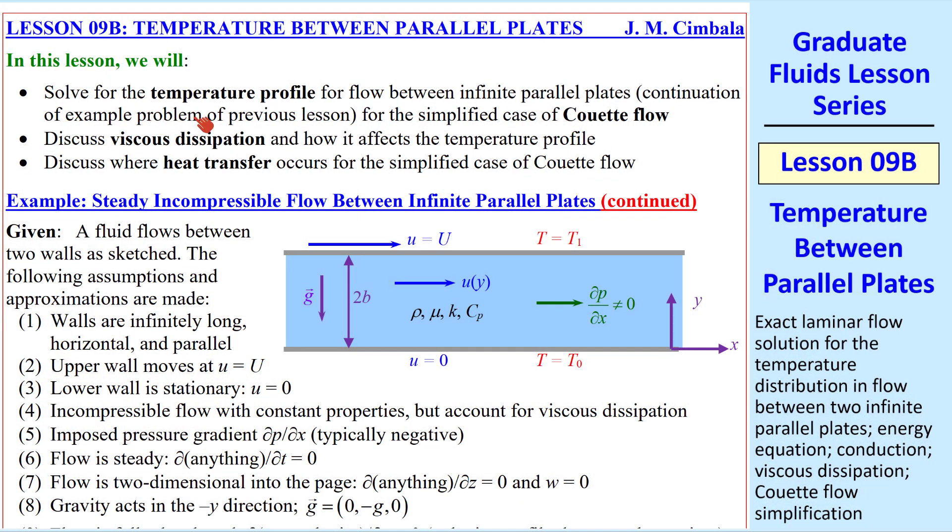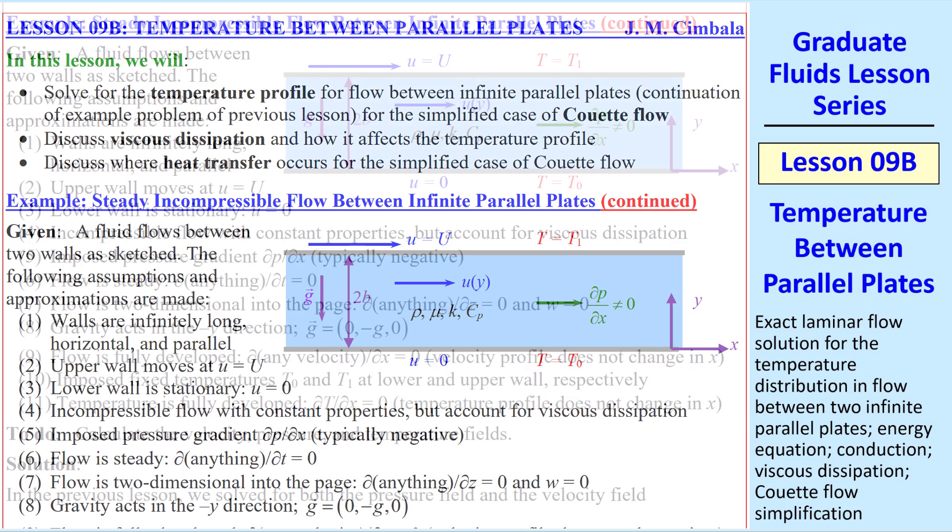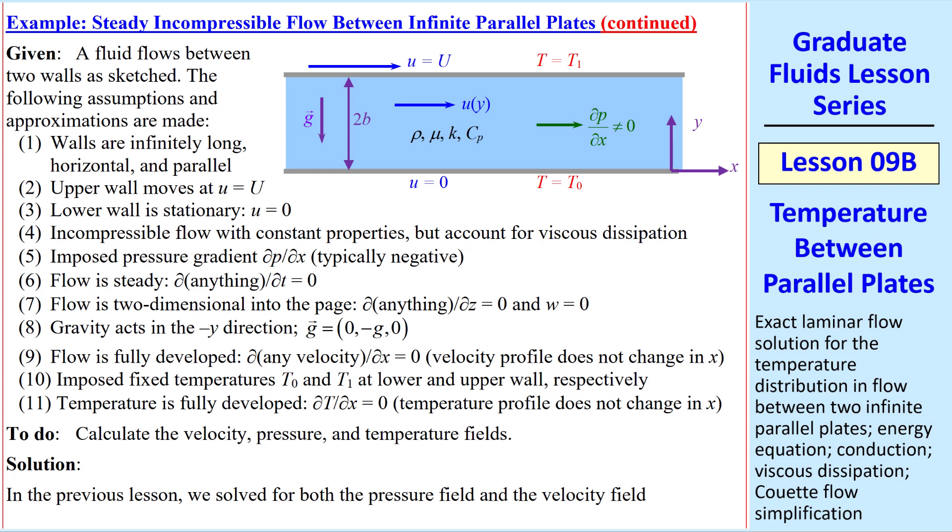In this lesson, we'll continue the example problem of the previous lesson and work on the temperature profile. We'll discuss viscous dissipation and where heat transfer occurs in the example problem. Here's the example problem from the previous lesson. We have a fluid between two infinite flat plates. The top plate is moving, and there's a forced pressure gradient.